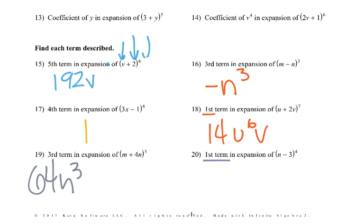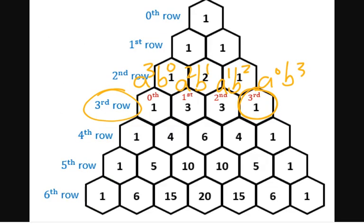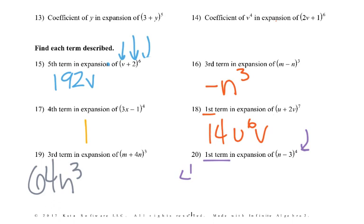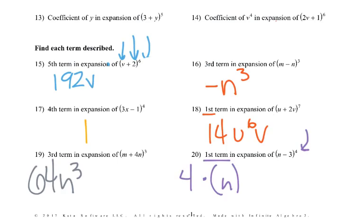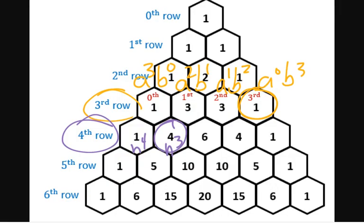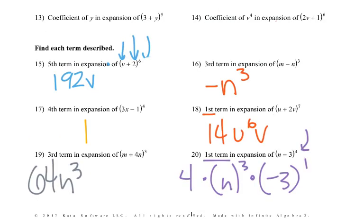Problem 20: first term in row four of (n + (-3))^4. So coefficient four, n starts at n^4 then n^3 — so it's n^3. Negative three starts at zero, then to the first. Negative three to the first is just negative three; four times negative three gives negative twelve, so the first term is -12n^3.